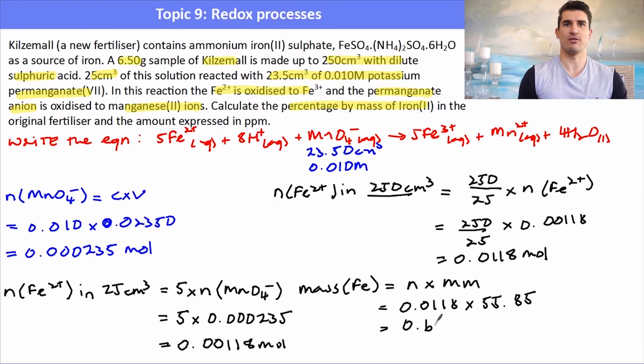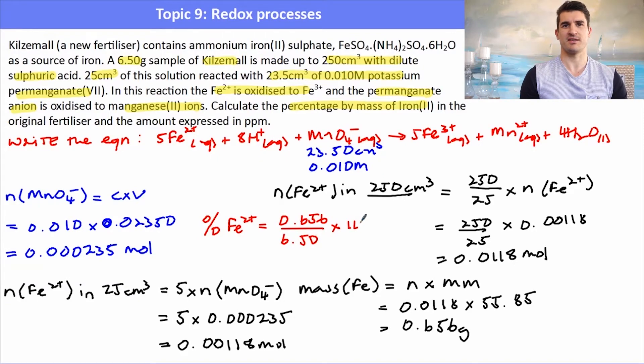So I've got my mass of iron in grams. And then now it actually says to work out the percentage by mass. So again, I'm going to work out the percentage, which will be my mass, 0.656 over the mass of the sample, which was 6.50 multiplied by 100. That gives me 10.1%. I've actually forgotten here to write it as parts per million, but ask in the comments below and I'll do that calculation.